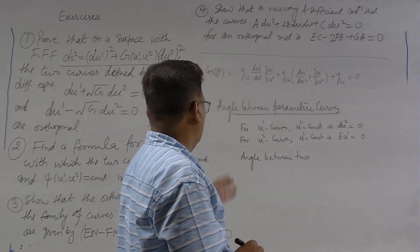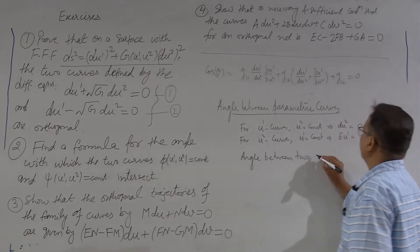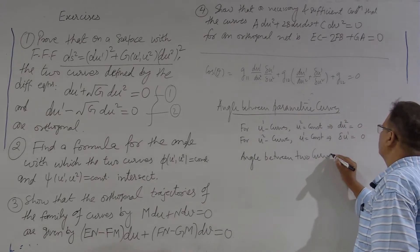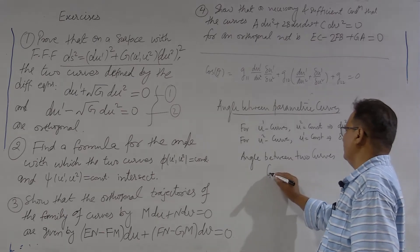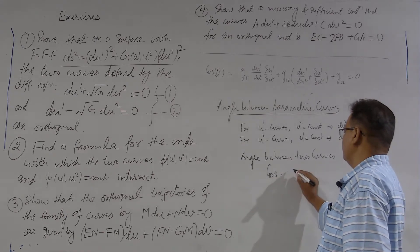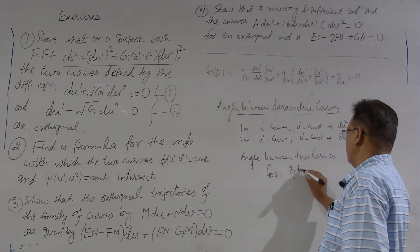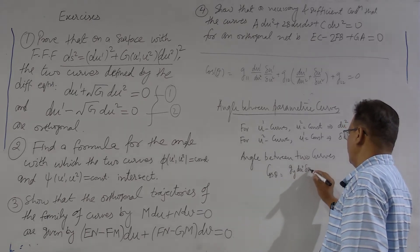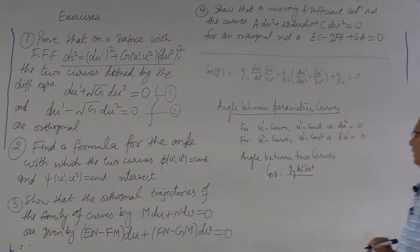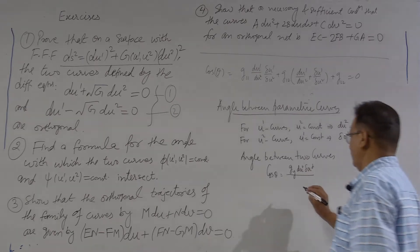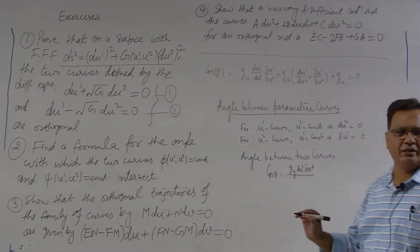Let us recollect the formula of angle between two curves on a surface. That was given by cos θ equal to g_ij du^i δu^j upon mod of dr into mod of δs.